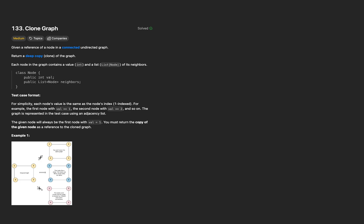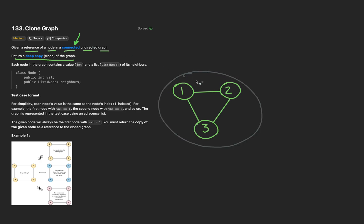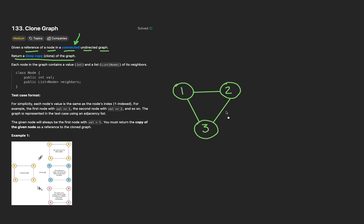Let's read the problem statement. We're given a reference to any node in a connected, undirected graph. Our task can be defined in one sentence: return a deep copy of the graph. Although the problem description is short and sweet, I do need to expound on some very important terminology. First up, what's a connected graph?